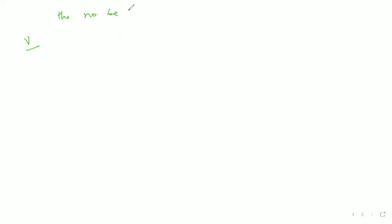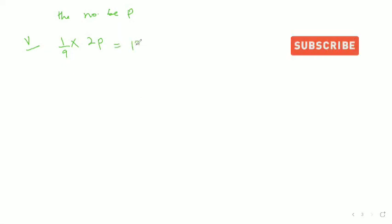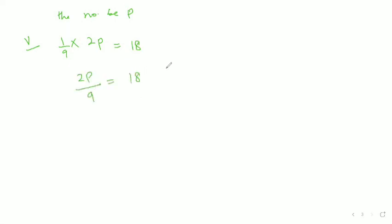The fifth part is: 1/9th of twice the number is 18. Let the number be p. So 1/9th of twice the number equals 18, or we can write 2p/9 = 18. This is our answer. Both forms are the same.